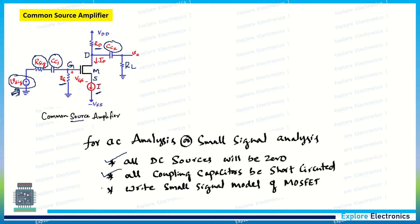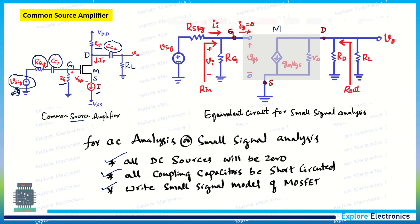In the equivalent circuit, the MOSFET is replaced by a dependent current source gm × VGS, where gm is the transconductance and VGS is the dependent parameter. The MOSFET also has an internal output resistance R0. At the input, V_signal is connected with R_signal, RG is grounded, and at the output RD and RL are also grounded.